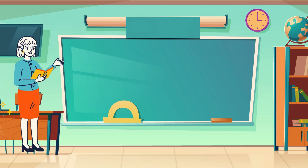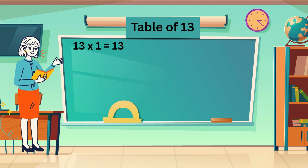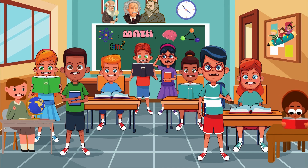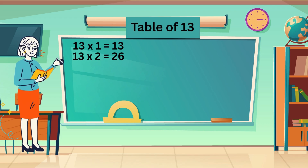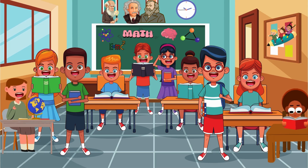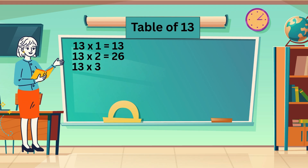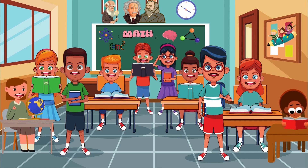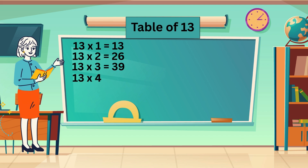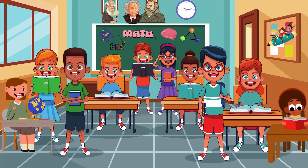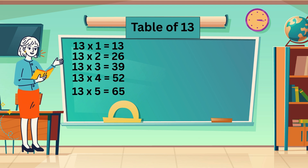Table of 13. 13 ones are 13. 13 twos are 26. 13 threes are 39. 13 fours are 52. 13 fives are 65.